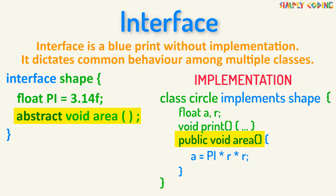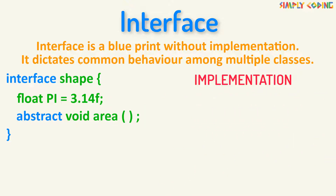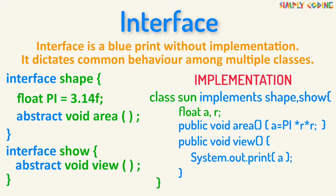These methods must have exactly the same signature — meaning the same name and parameters — as declared in the interface. Multiple inheritance is not allowed for classes in Java, but a class can implement multiple interfaces. For this, you can specify multiple interfaces separated by commas.